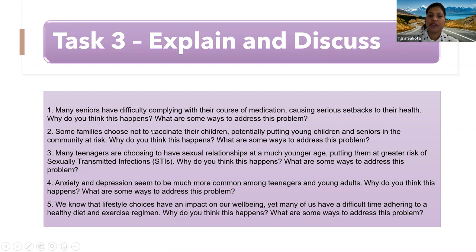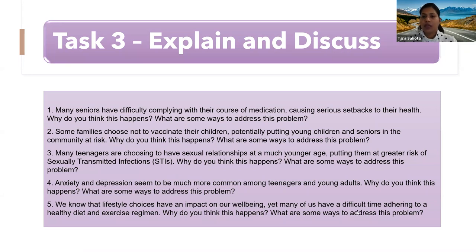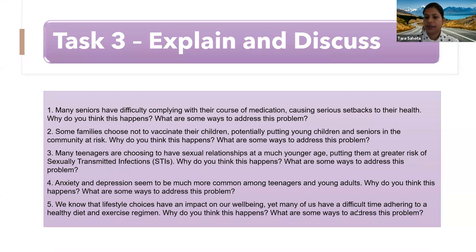For example: many seniors have difficulty complying with their course of medication, causing serious setbacks to their health — why do you think this happens and what are some ways to address this problem? Many teenagers are choosing to have sexual relationships at a younger age, putting them at greater risk of sexually transmitted infections — why do you think this happens? Anxiety and depression seem to be much more common among teenagers and young adults — why do you think this happens and what are some ways to address it? All these examples are literally from the Touchstone website.